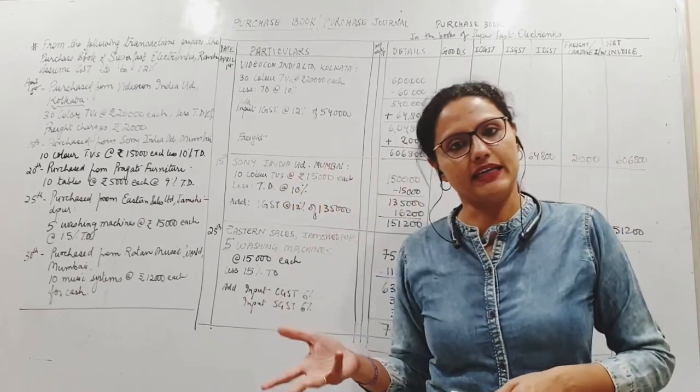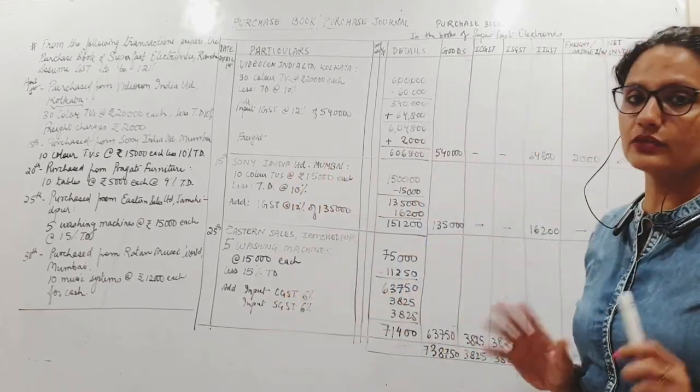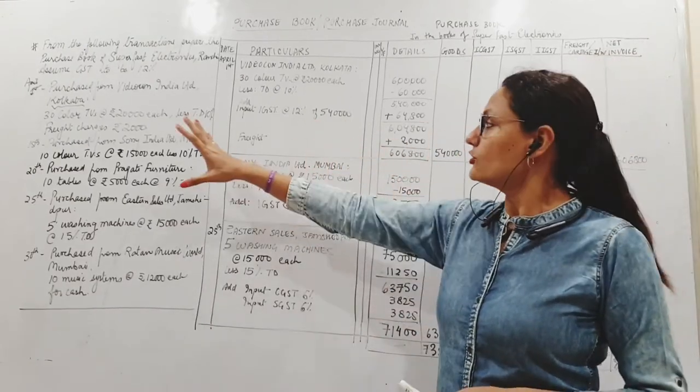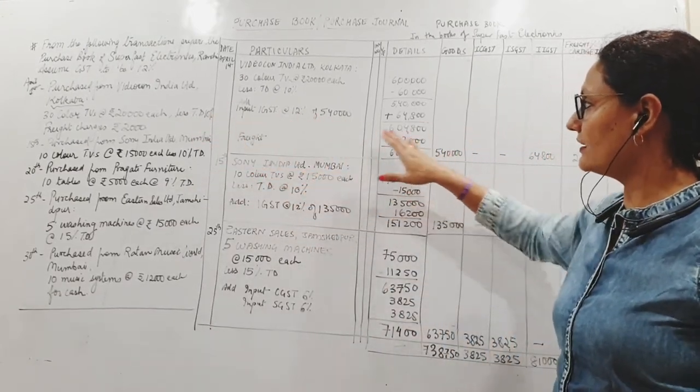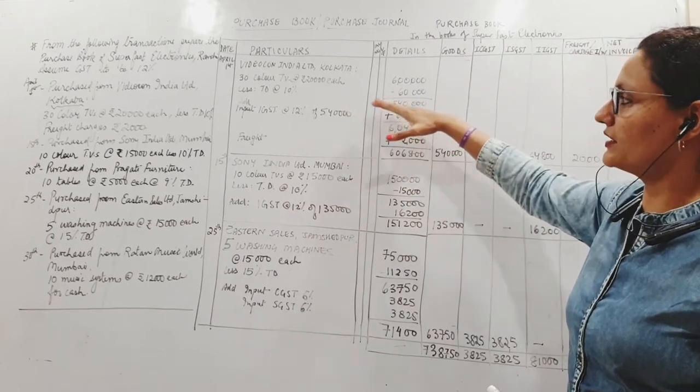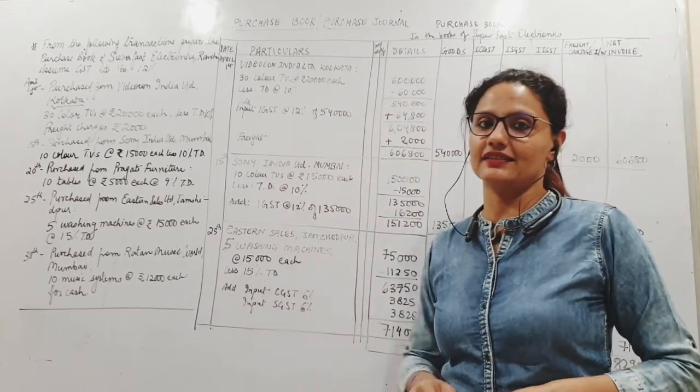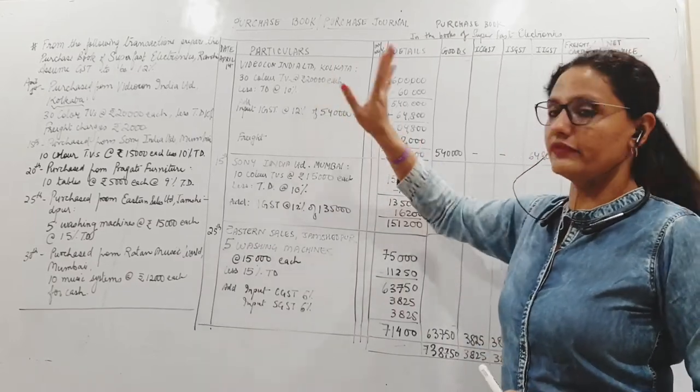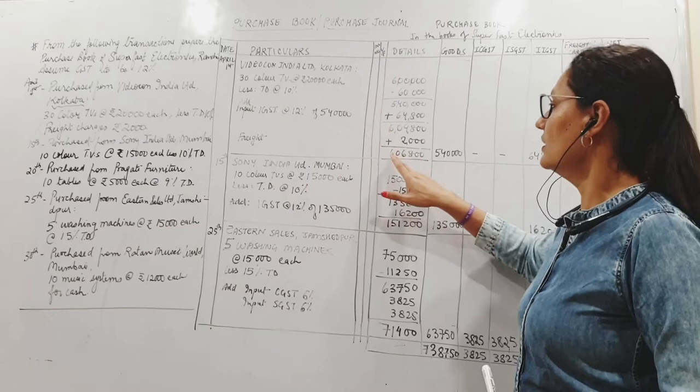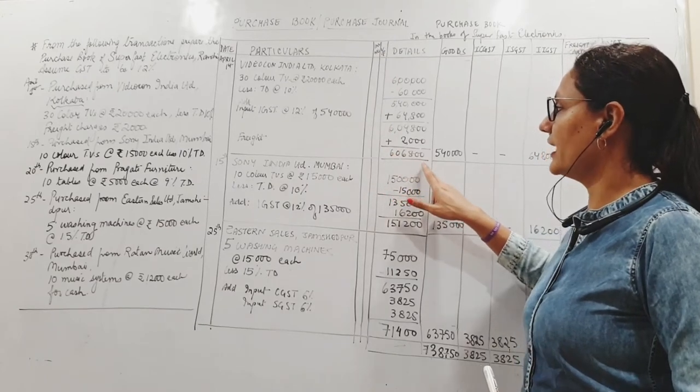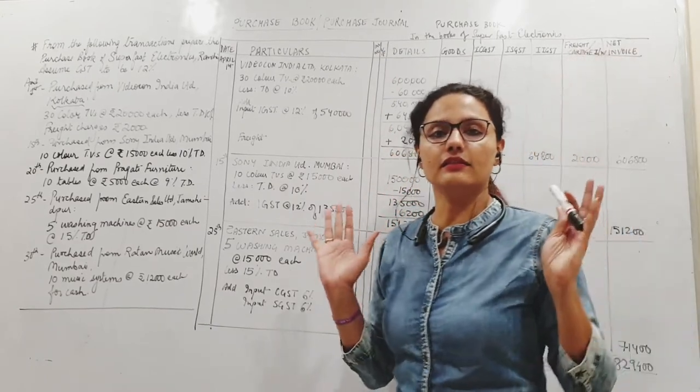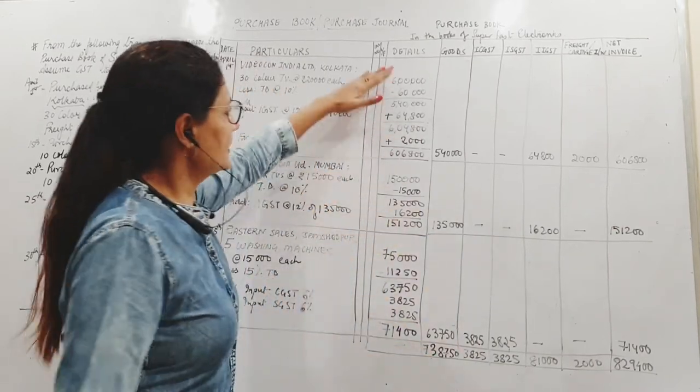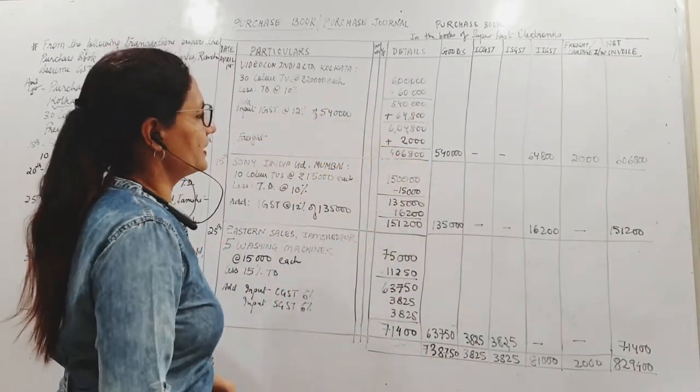Here you have been just given the amount of freight, so please add it up later. Do not add freight first here and then apply tax rate. This is the amount of freight, so this 2,000 also I have to pay to Video Con. So 6 lakh 6,800 is my total expenditure. Details done.